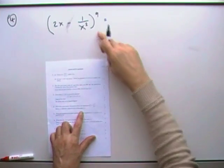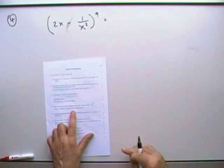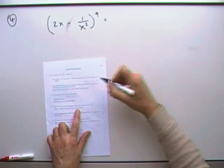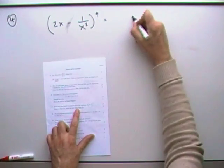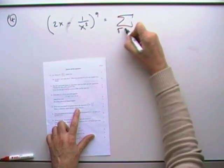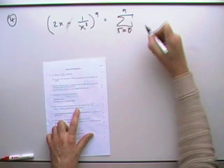Question 4. Binomial expansion. It says write down and simplify the general term. So I'm always tempted just to go in with the actual form of the expansion which would have been this. You go from r is equal to 9 of